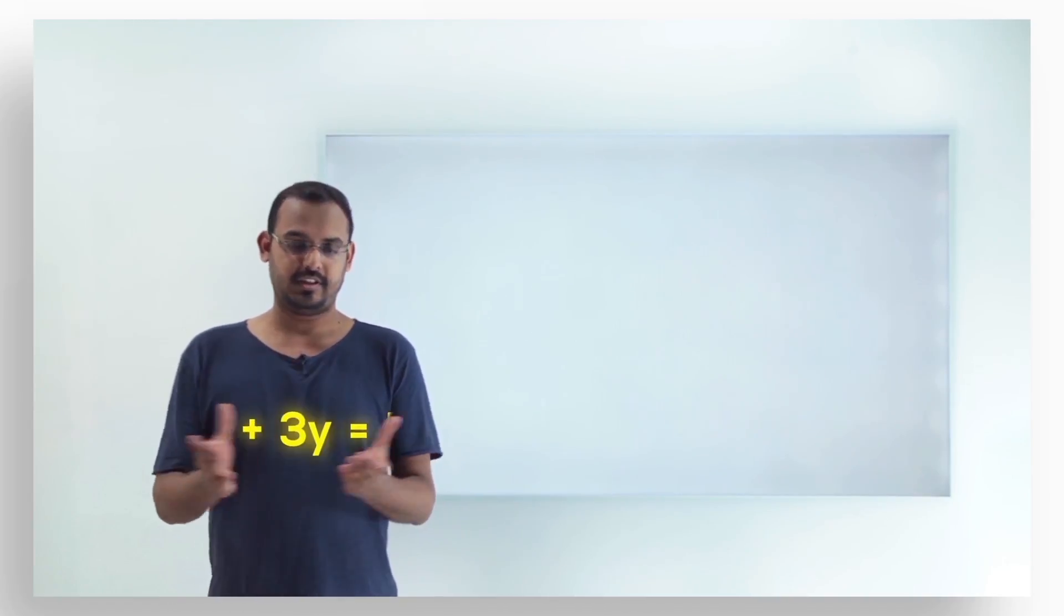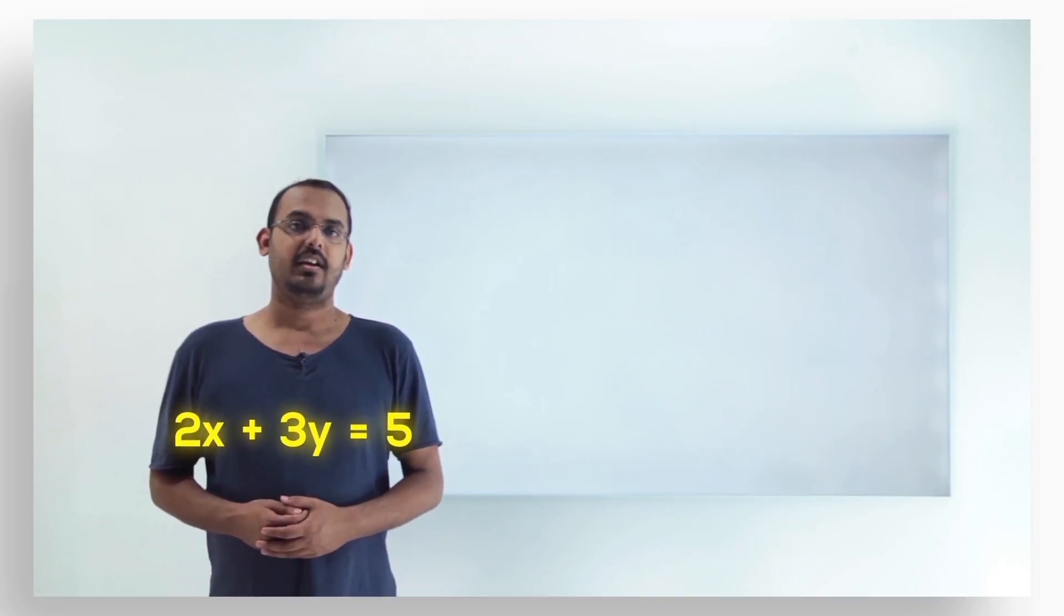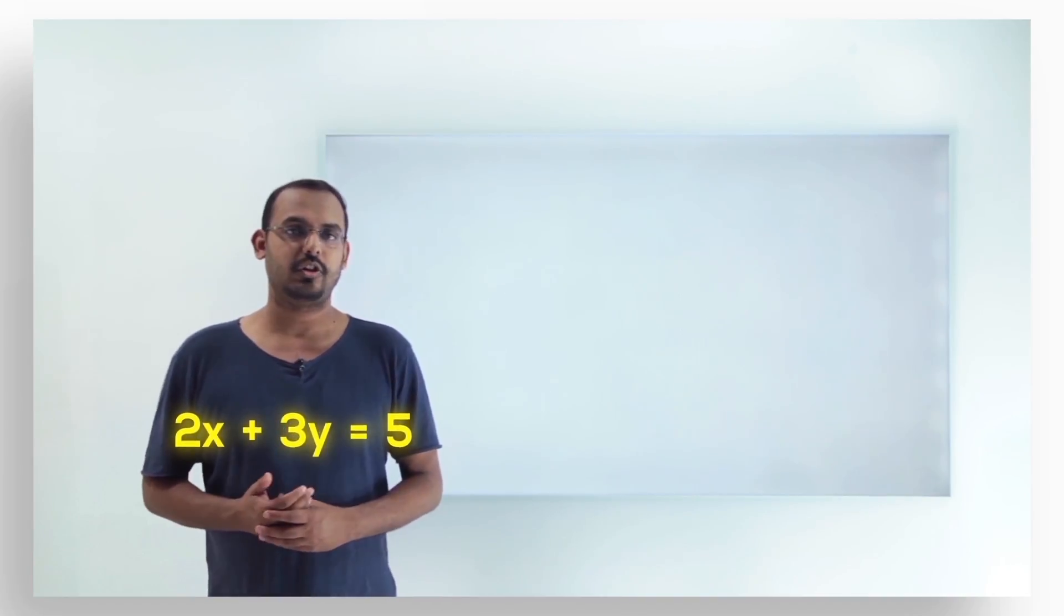The linear equation in two variables that we had a look at was 2x plus 3y is equal to 5. This is the linear equation that we understood and solved for the solution.